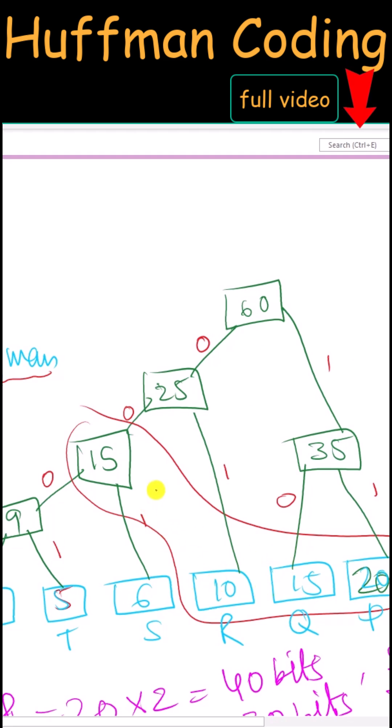We can take either of them. So we have taken these two. If we merge these two together, we have a new node with the frequency 25.